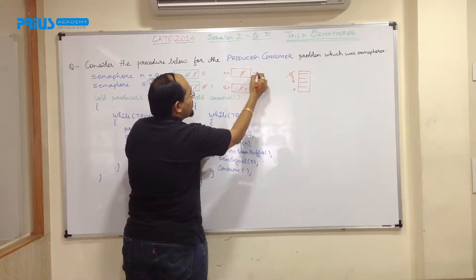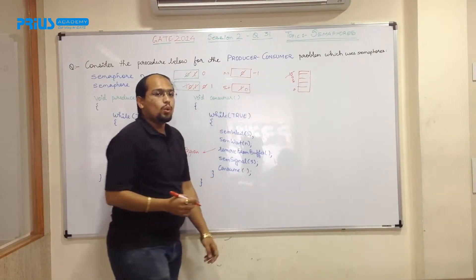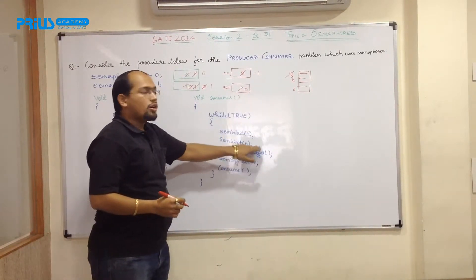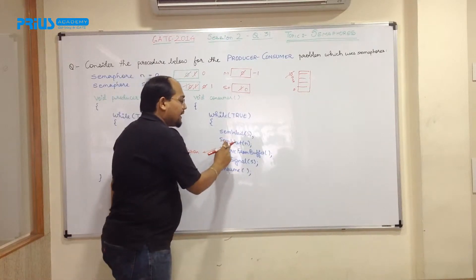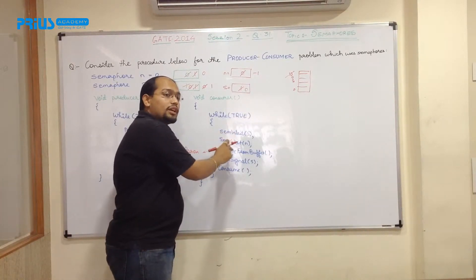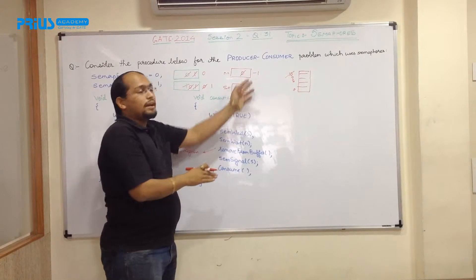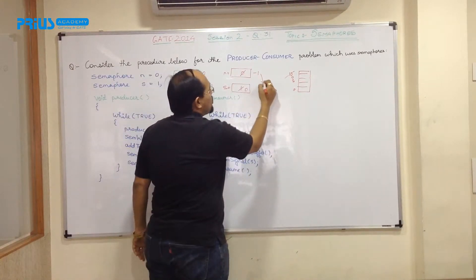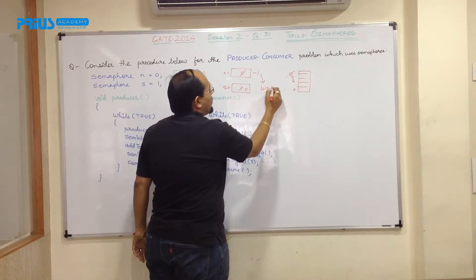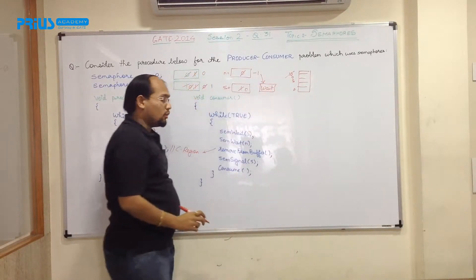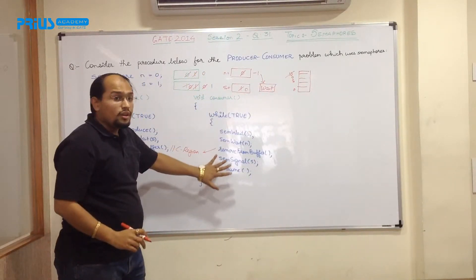This is already 0. Decrementing this means it is minus 1 and minus 1 means it will not go ahead. It indicates that there is someone already in the critical section or at minus 1, we are just making that process to explicitly wait. It cannot do anything. That means it cannot proceed further.